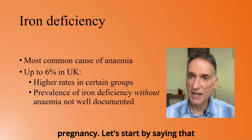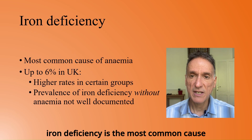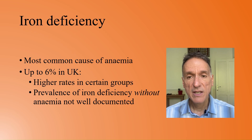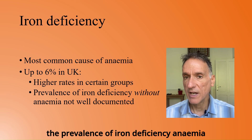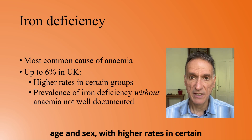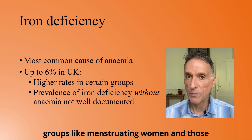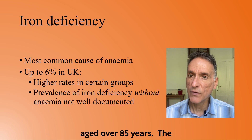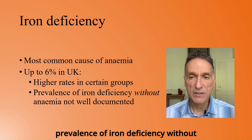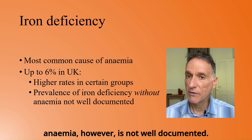Iron deficiency is the most common cause of anaemia worldwide. In the UK, the prevalence of iron deficiency can go up to 6% depending on age and sex, with higher rates in certain groups like menstruating women and those aged over 85 years. The prevalence of iron deficiency without anaemia, however, is not well documented.